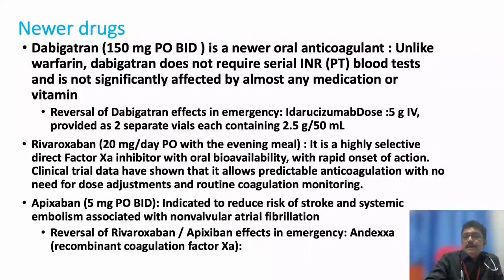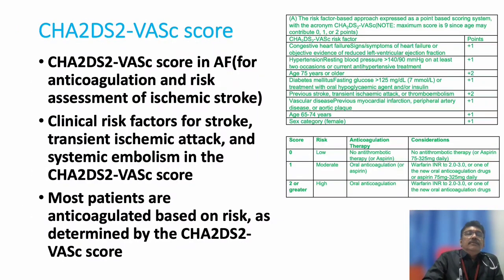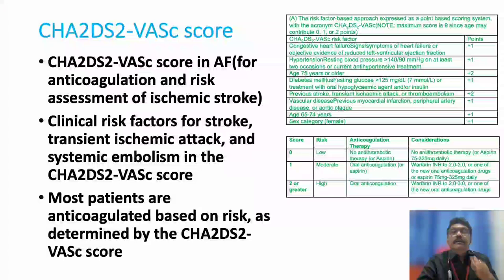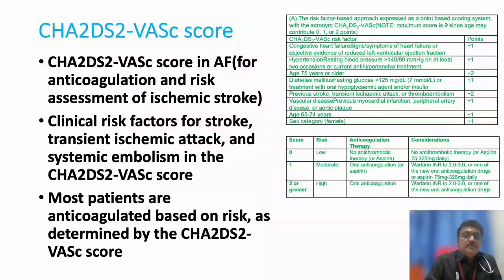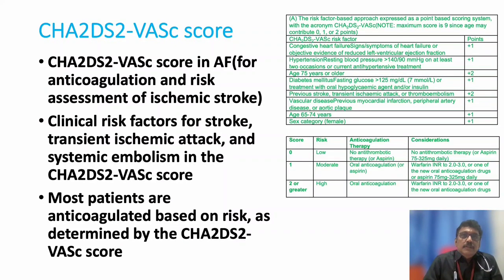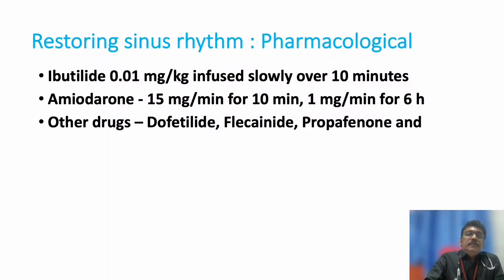The CHA₂DS₂-VASc score is used for risk stratification in atrial fibrillation. Based on this score, anticoagulation planning follows a standardized protocol. We will not go into the details of the score here, but it guides all anticoagulation decisions.